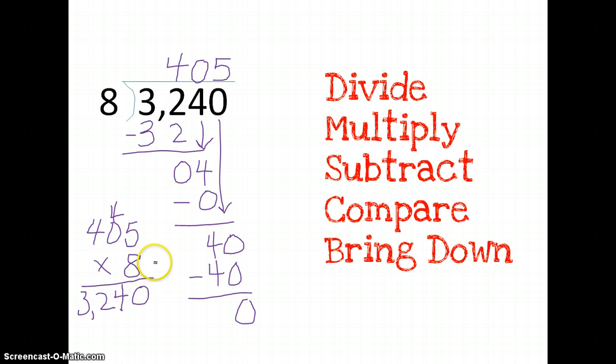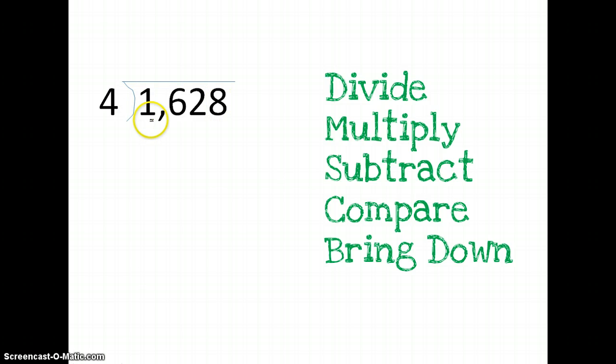Let's try one more. 1,628 divided by 4. The first thing I do is divide. 4 can't go into 1, so I move on one place. 4 will go into 16 four times. 4 times 4 is 16. I'm going to subtract. I get 0. Compare. My 0 is smaller than my 4. Bring down my 2.